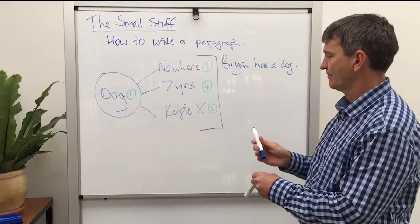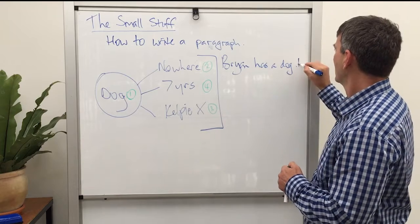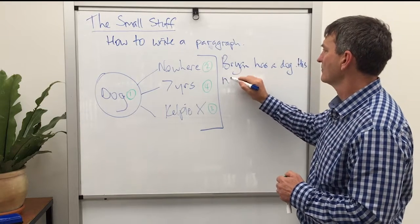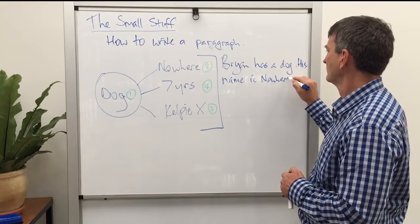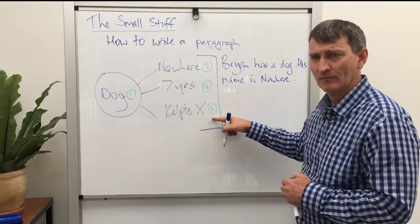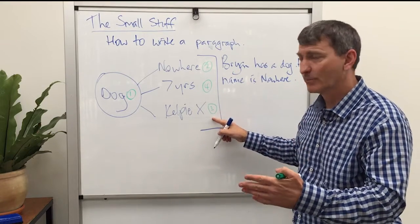Brian has a dog. His name is Nowhere. Nowhere is a Kelpie Cross.